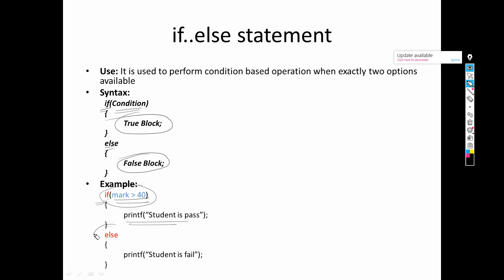Otherwise means else. If this condition is wrong, it will directly jump to the else part and this statement will not be executed. So either the if block will execute or the else block will execute — not both. If the condition is false, it goes to the else part and prints 'student is failed', because if the first condition is false, the second automatically becomes true. So if-else is very useful when we have two possibilities.